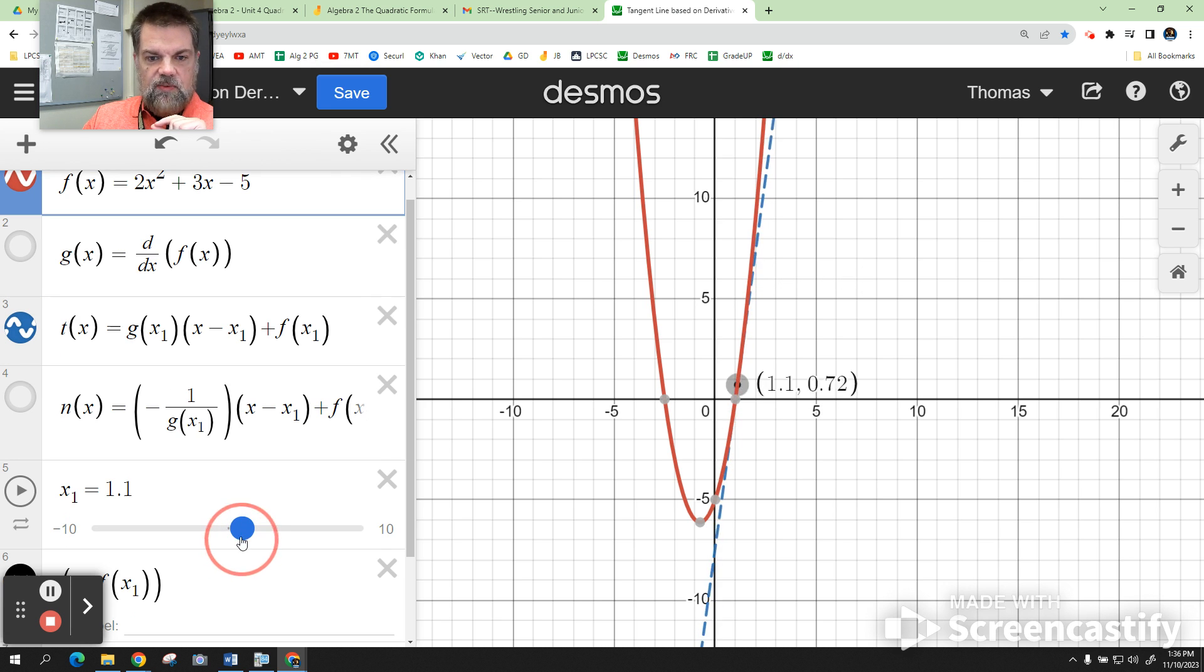What I did was put a slider in and use x₁ as the value that we're evaluating everything at. As you can see, there's a tangent line.